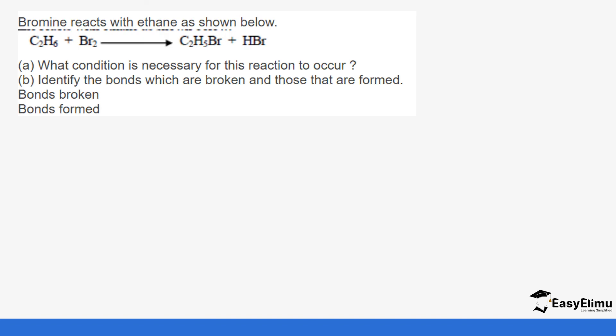This is a sample question in regards to an application of effects of light on the rate of reaction. Bromine and ethane react as shown. You can see the bromine reacts with ethane to form bromoethane and hydrogen bromide. What condition is necessary for this reaction to occur? This reaction needs UV light because UV light provides energy that helps in breaking the bonds so that new bonds can be formed.